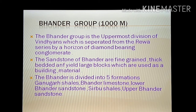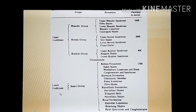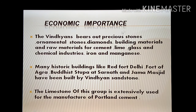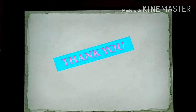Bhandir is divided into five formations: Ganurgarh shales, Bhandir limestone, lower Bhandir sandstone, Sirbu shales, and upper Bhandir sandstone. The economic importance of the Vindhyans includes precious and ornamental stones, diamond-bearing material, and raw material for cement, lime, glass, and chemical industries, as well as iron and manganese. Many historic buildings like the Red Fort, Fort of Agra, Buddhist stupa at Sarnath, and Jama Masjid have been built using Vindhyan sandstone. The limestone is extensively used for manufacture of Portland cement.